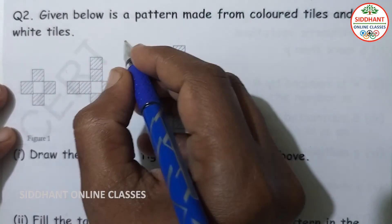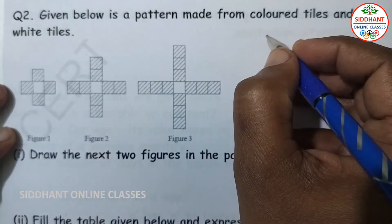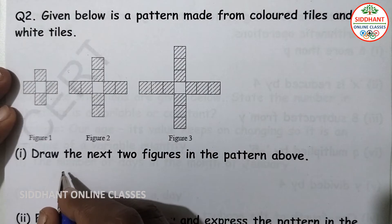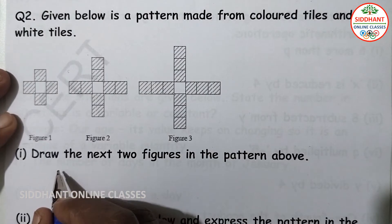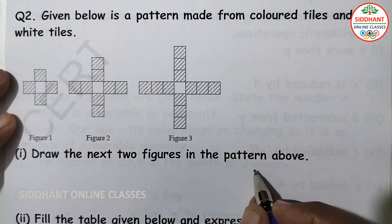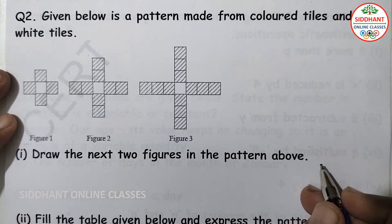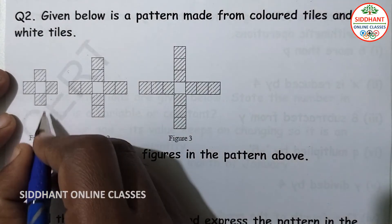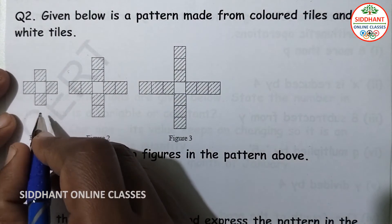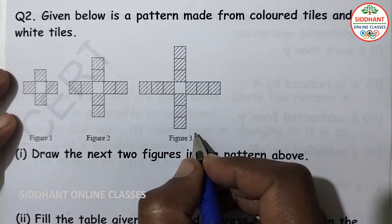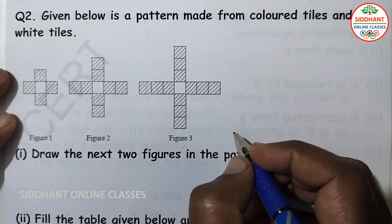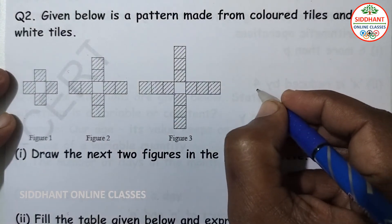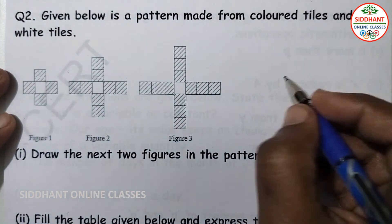Question number two: given below is a pattern made from colored tiles and white tiles. The first question asks to draw the next two figures in the pattern. Figure 1, figure 2, and figure 3 are given, and we are going to draw the next two figures.